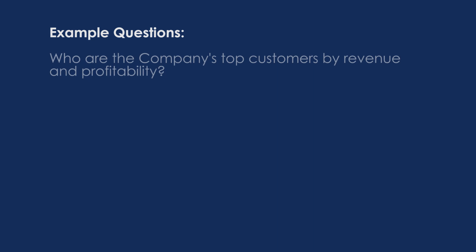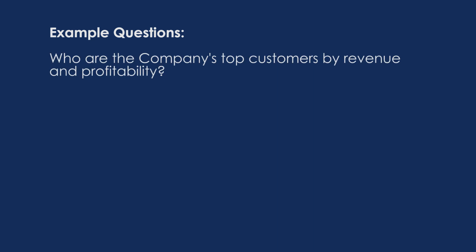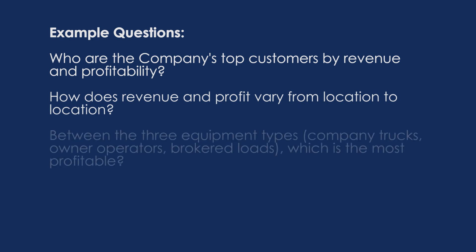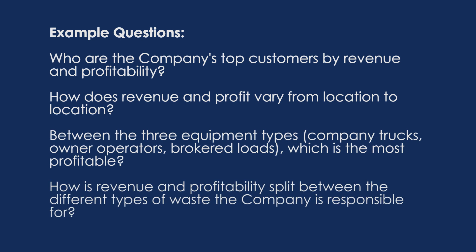So from this description, an analyst might be interested in the following data points: Who are the company's top customers by revenue and profitability? How does revenue and profit vary from location to location? Between the three equipment types, which is the most profitable? How is revenue and profitability split between the different types of waste the company is responsible for? And those are just a few examples of how we're going to splice all of this data. It is a lot of data, but by the time we're done, you're unlikely to ever be intimidated by a data set, because this stuff is pretty simple once you have the skill set.